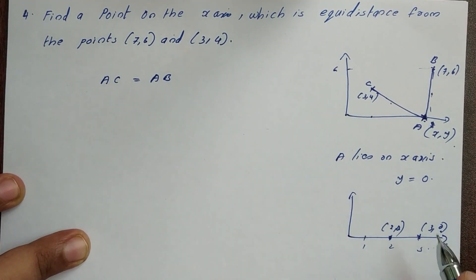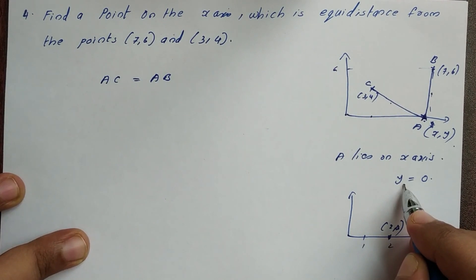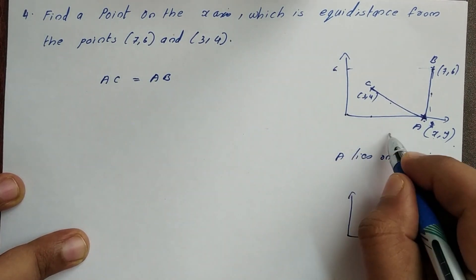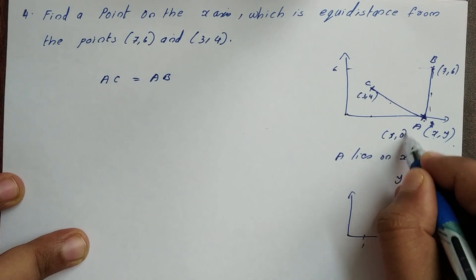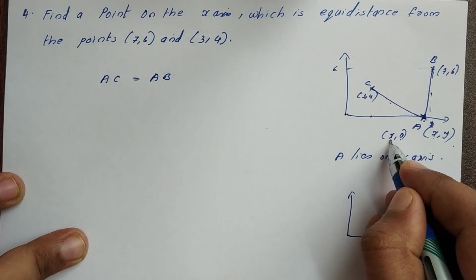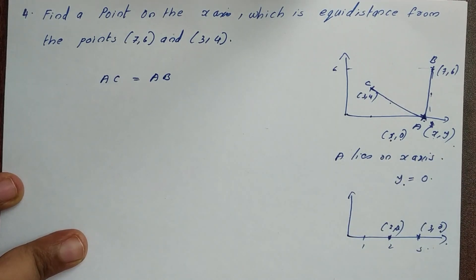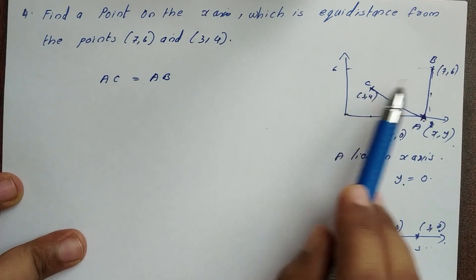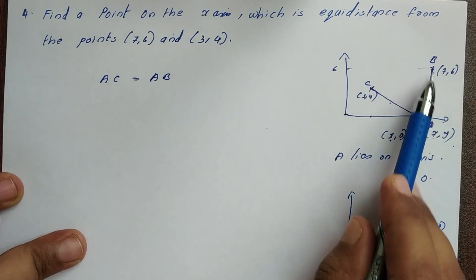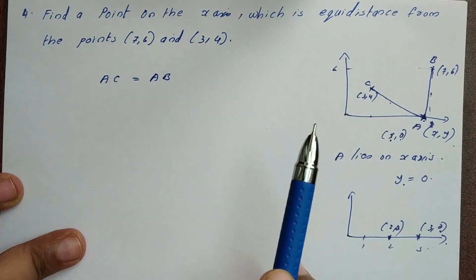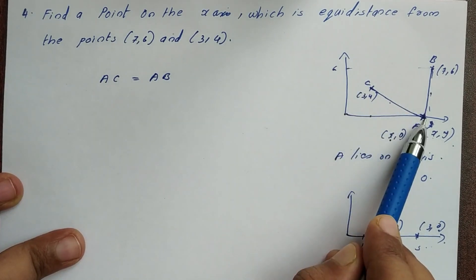On the x-axis, y coordinate equals 0. So we call this point (x, 0). We apply the distance formula. Let point A be (x, 0) on the x-axis, and the condition is that AC equals AB — meaning this point is equidistant from both given points. We use the distance formula.